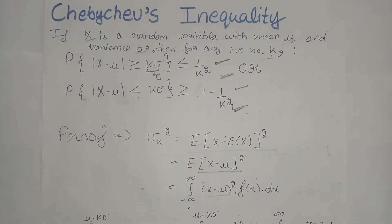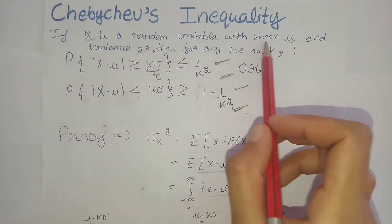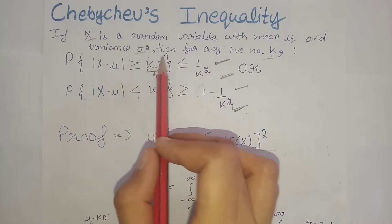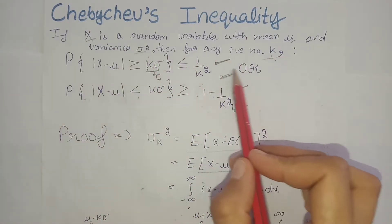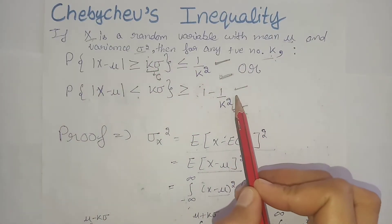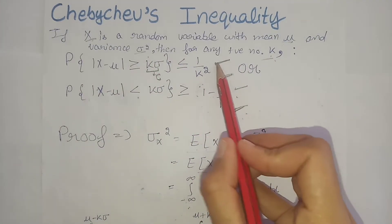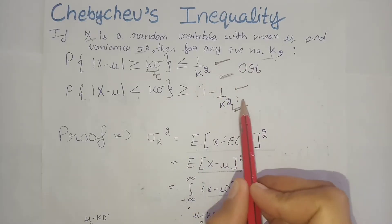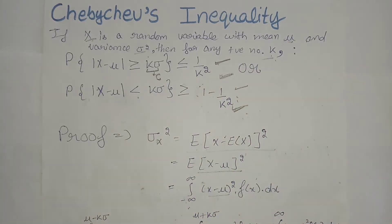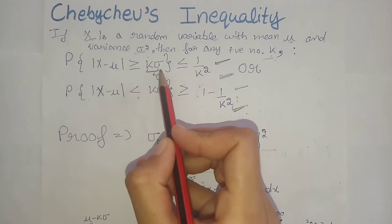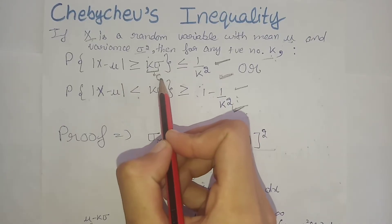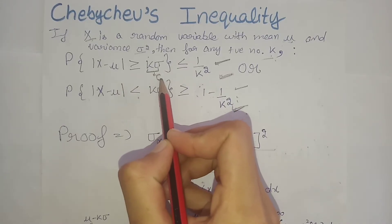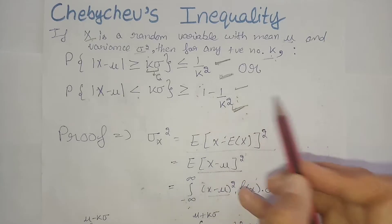Today we are going to prove Chebyshev's inequality. Let's first see the statement, then we will do the proof. If x is a random variable with mean mu and variance sigma squared, then for any positive number k we have two statements. We will first prove statement one, then statement two, and also a special case where k sigma's value equals c.